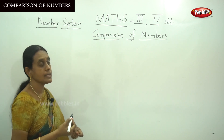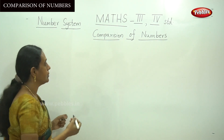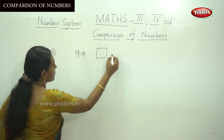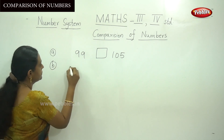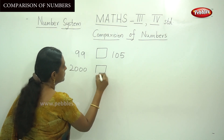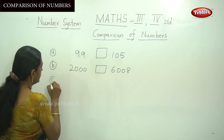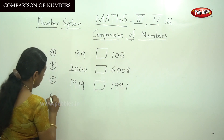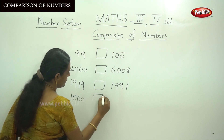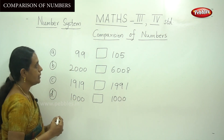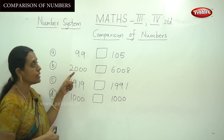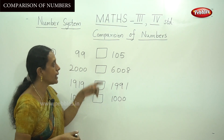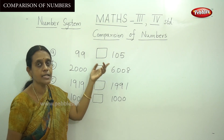By using the lesser sign, greater sign, and equal sign, let me do some example sums. First, observe and count the digits of the numbers. Here, the left-hand side has only two digits, and our right-hand side number 105 has three digits.